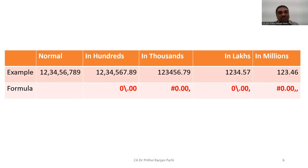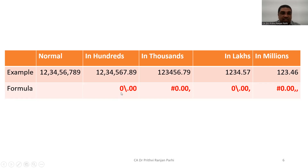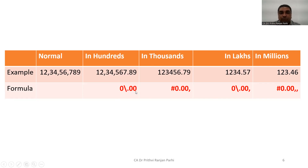Now let me show you some formulas for doing this in Excel sheets. Let us say a normal number has to be converted — into hundreds it should look like this, into thousands like this, into lakhs like this, into millions like this. The formulas we use to customize cells are: for hundreds, use `0/0.00`; for thousands, `0.00,` (with one comma); for lakhs, `0/0.00,` (with one comma); for millions, `0.00,,` (with two commas).